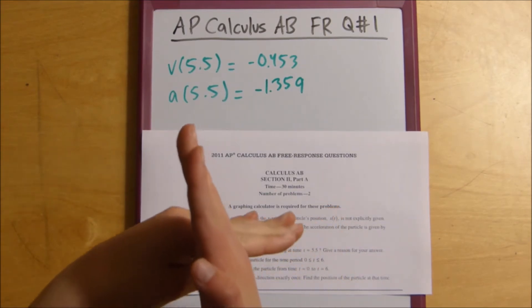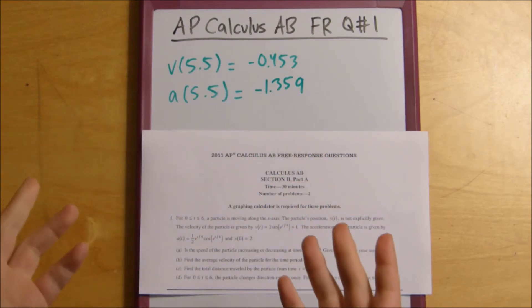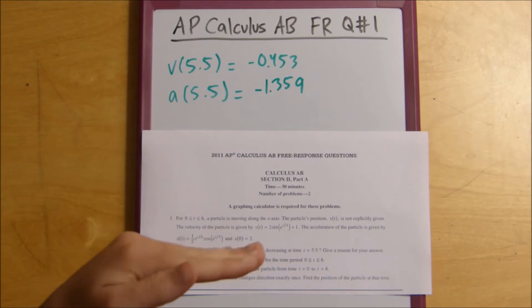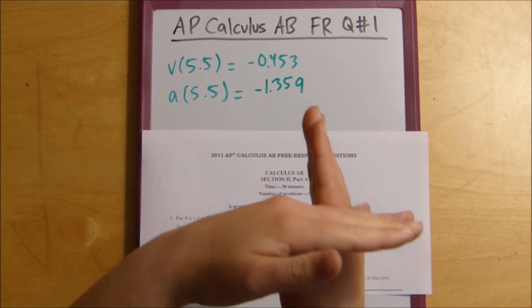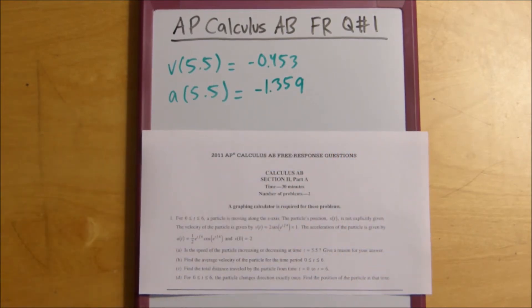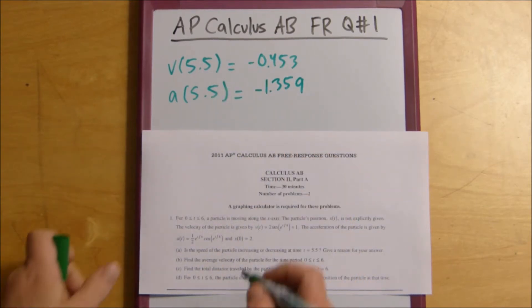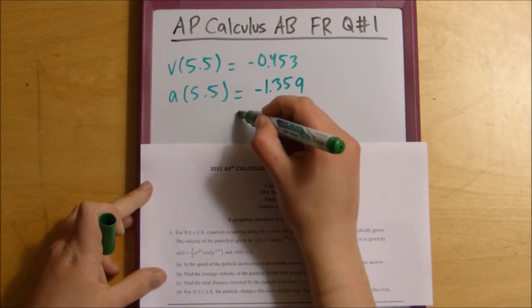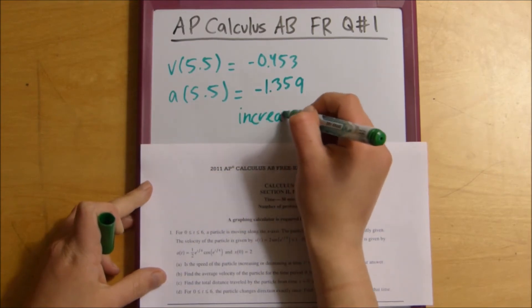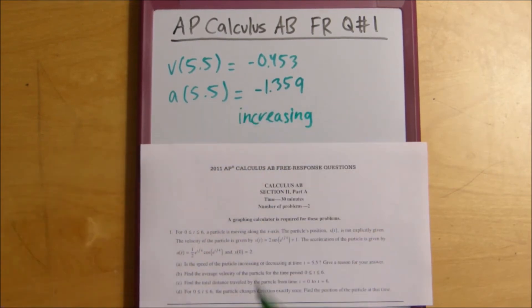And if the two signs are both positive, you would also say it's increasing. However, if the two signs are different, like one is negative and one is positive, you would say that it's decreasing. But since here the two signs are the same, you would say that the speed of the particle is increasing.